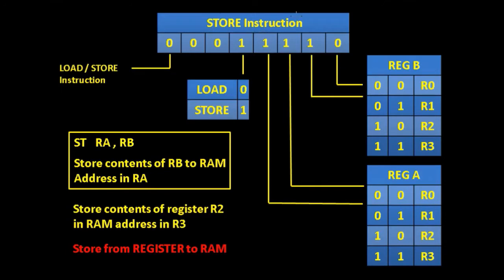The next instruction we looked at was the store instruction. The store instruction is given by 0, 0, 0, 1, and then we'd have a choice of registers for REG A and REG B. The assembly language for this is written as ST RA, RB — this stores the contents of register RB to a RAM location given in register RA.